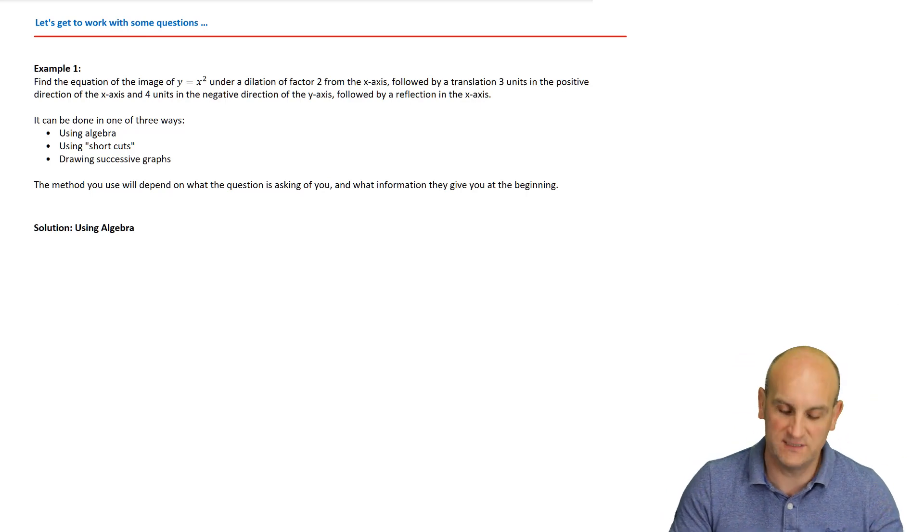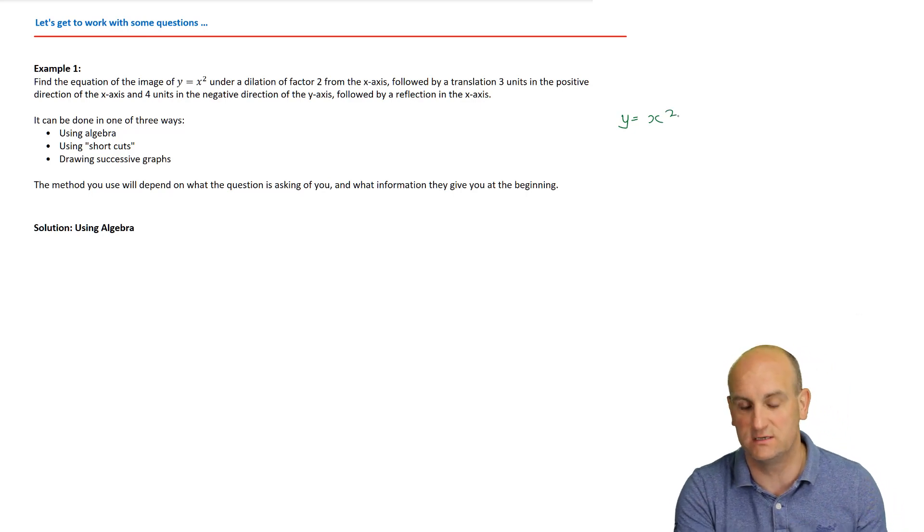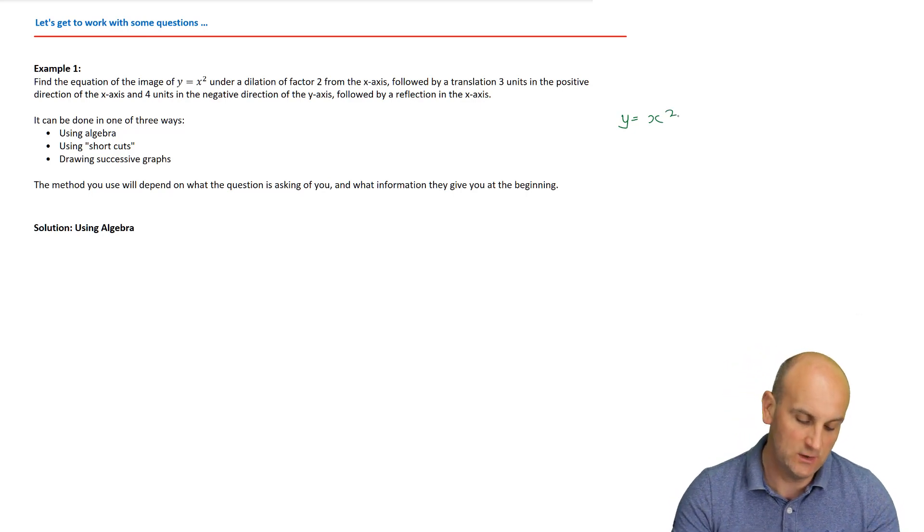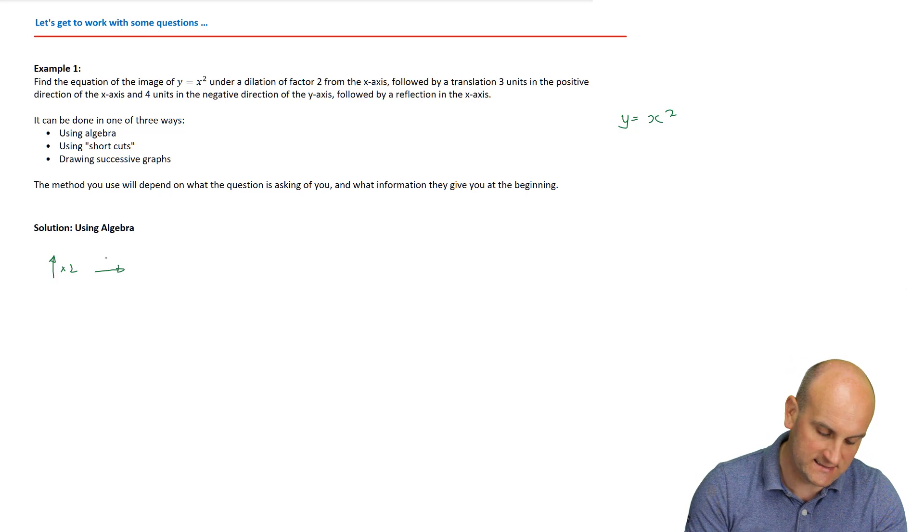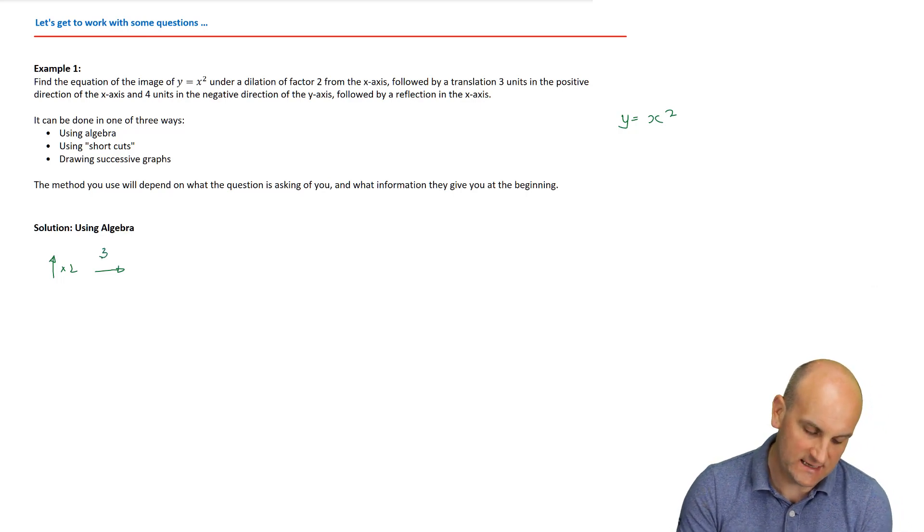Find the equation of the image of y equals x squared. So first things first, we've got this y is equal to x squared. Now, I think of that as my base graph. That's where I'm starting from and I'm trying to get to. Under a dilation of factor two from the x-axis. So factor two from the x-axis, quick arrow, followed by a translation, three units in the positive direction of the x-axis. So not the next. Don't put an x there. Put a three.